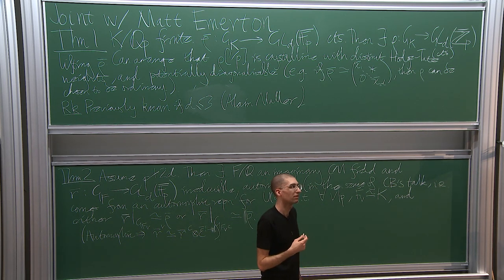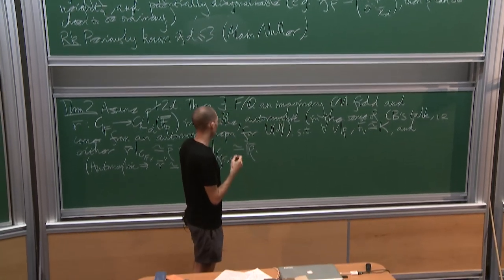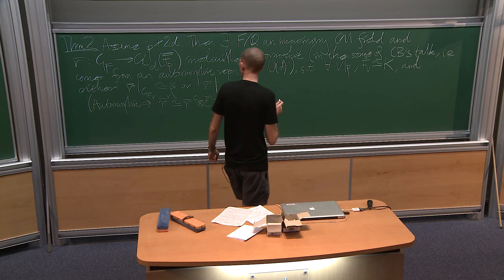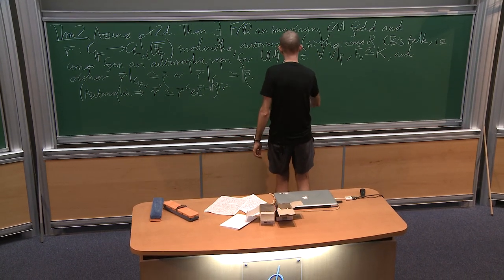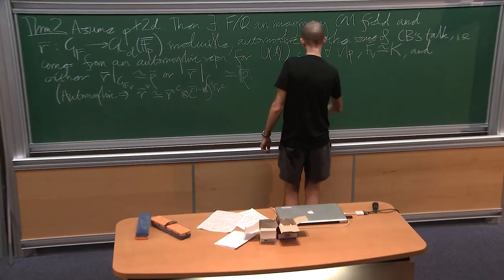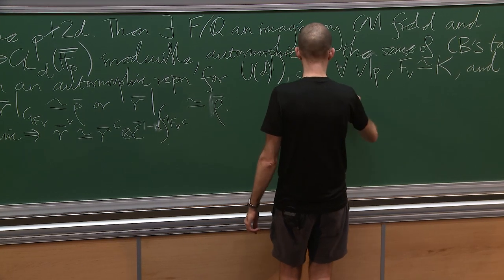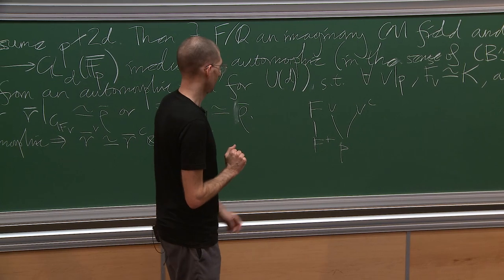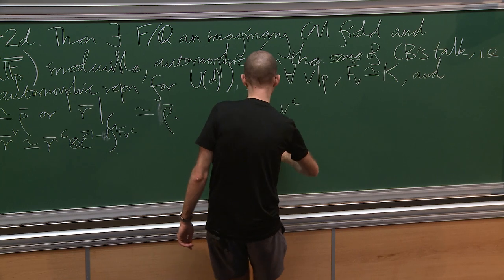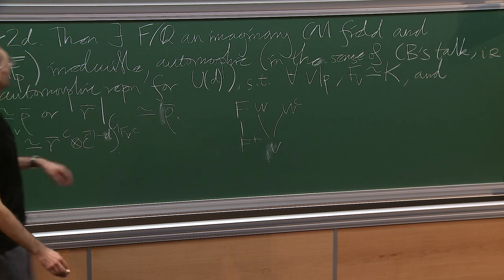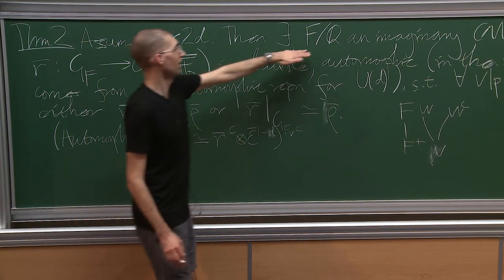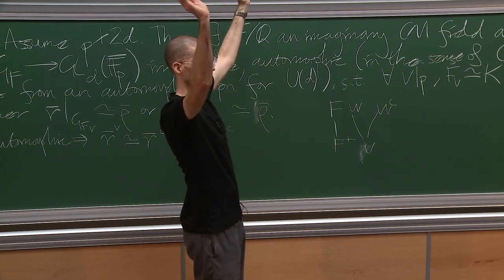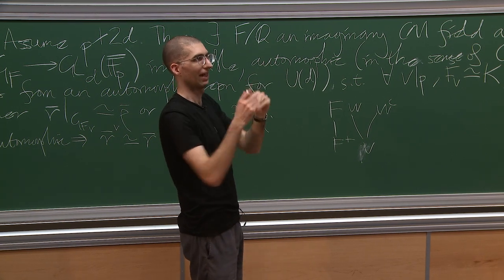It's implicit that complex conjugation acts without fixed points on the places above p since it's an imaginary CM field. If F over F^+ is the maximal totally real field, implicit in what I'm saying is that p is going to split. In the construction, the first step is to choose an imaginary quadratic field in which p splits, and everything lies over that. Also, you can construct lots of lifts — you can make them with arbitrarily spread out weights or within some range.